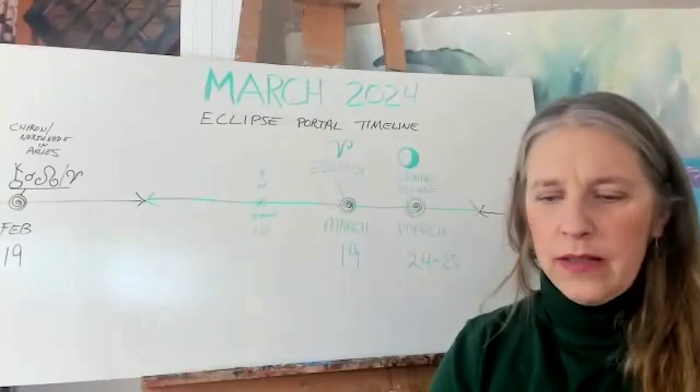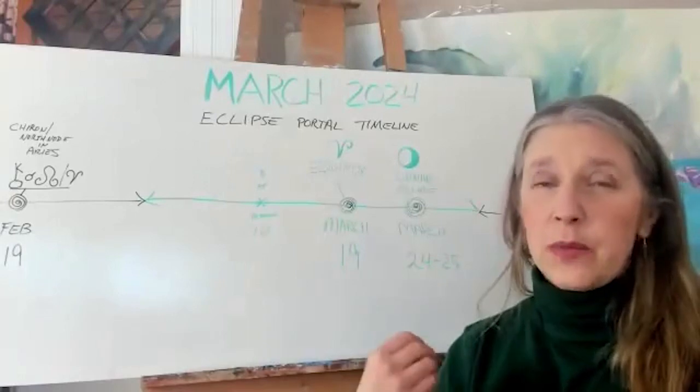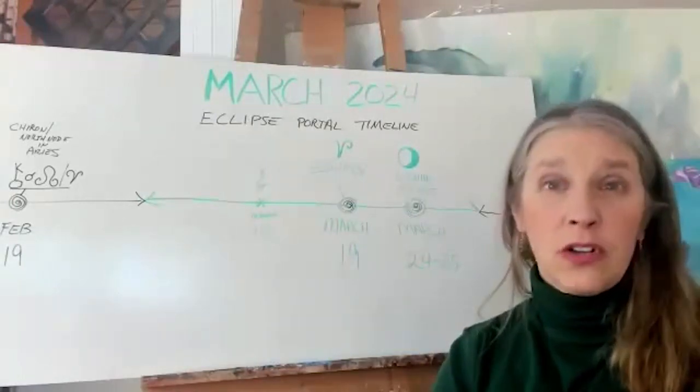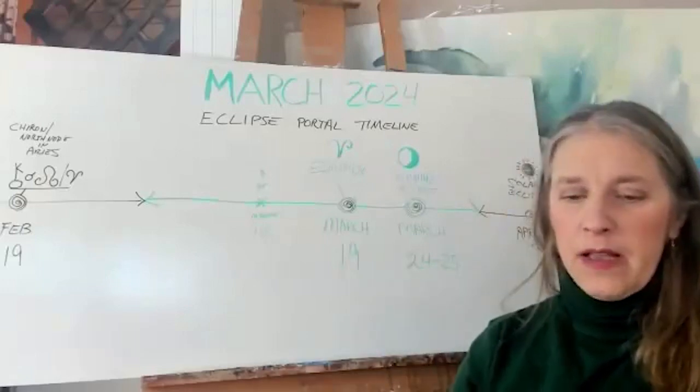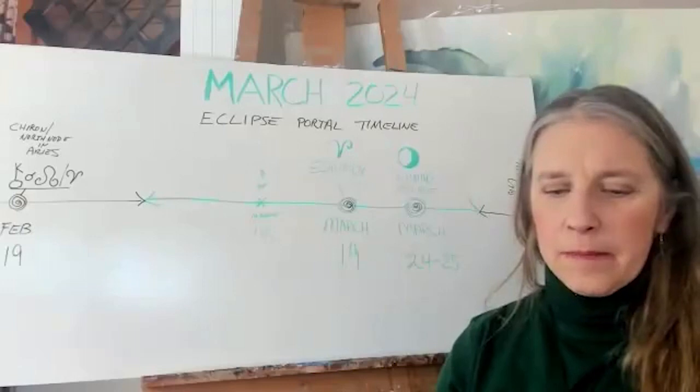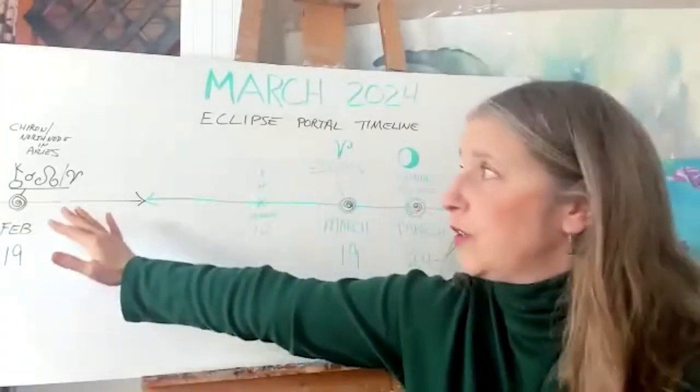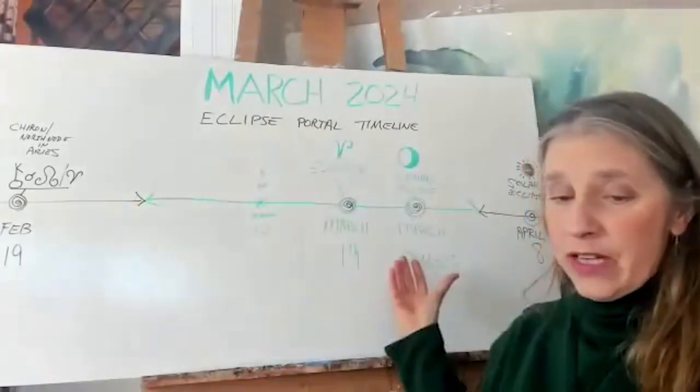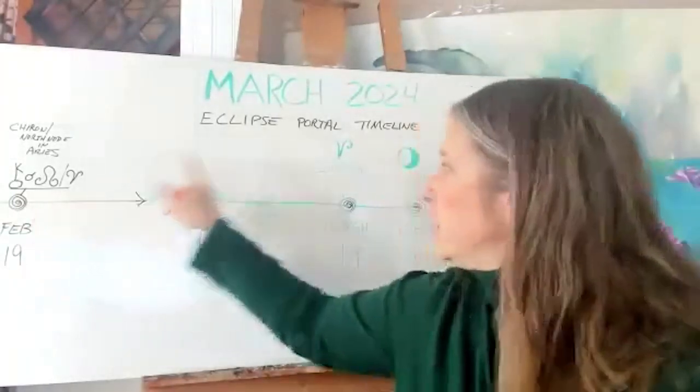Again these are themes of sovereignty, purpose, personal power, and it could be a collective power. It could be movements starting. This event right here in February, the Chiron conjunct North Node in Aries, really sets the tone for the eclipse event.